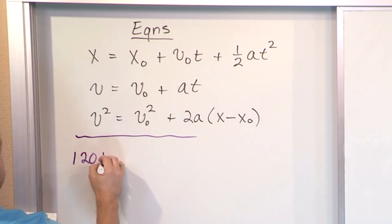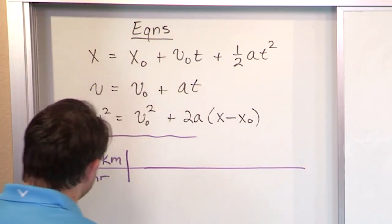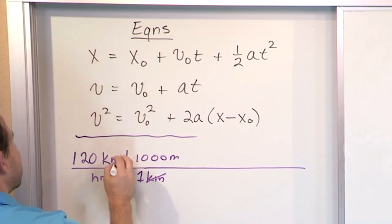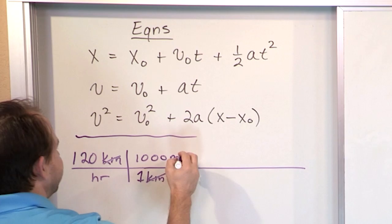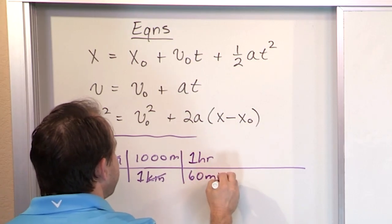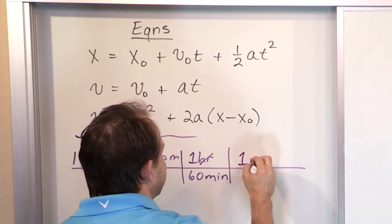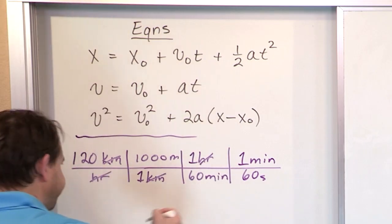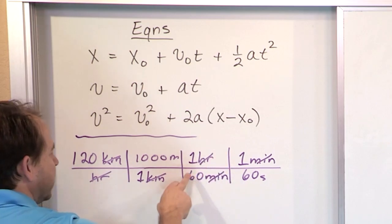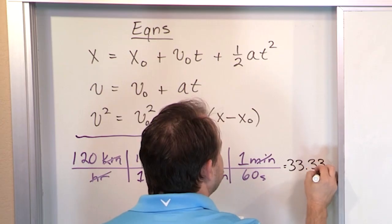To convert, I write 120 kilometers per hour. First I handle the kilometer part: one kilometer equals 1,000 meters, so kilometers cancel and I have meters per hour. Then I convert hours: one hour equals 60 minutes, so hours cancel and I have meters per minute. Then one minute equals 60 seconds, so minutes cancel. Multiplying 120 times 1,000, then dividing by 60 and by 60, I get 33.33 meters per second. The problem could have been stated: an airplane has a liftoff speed of 33.33 meters per second.